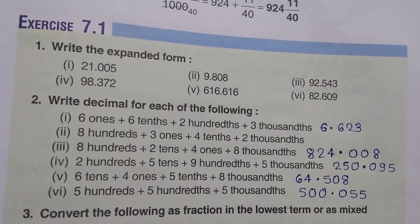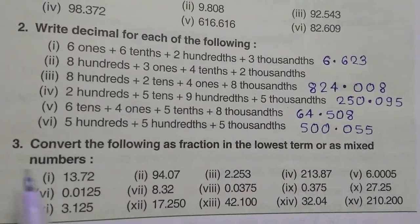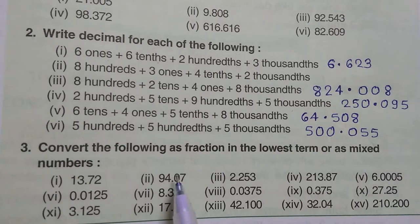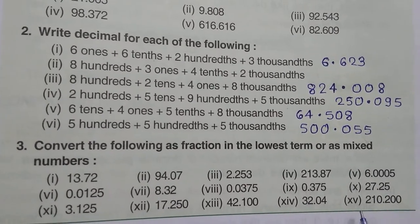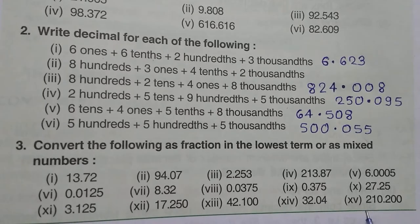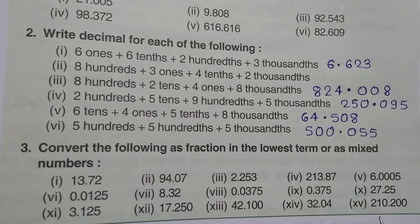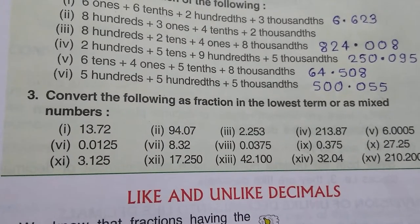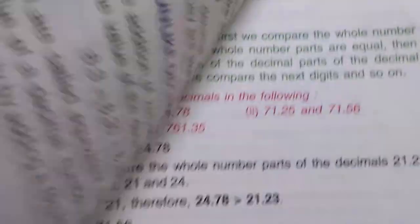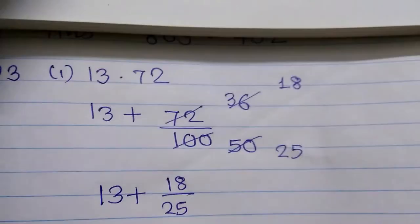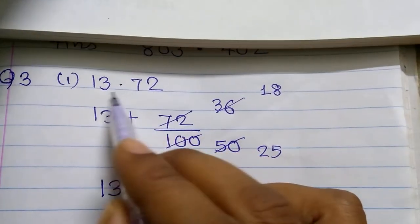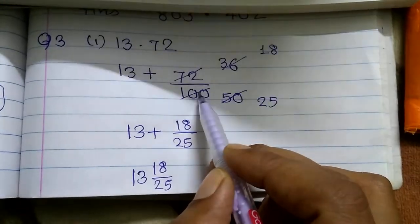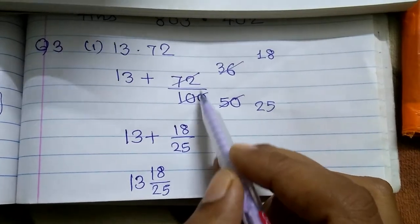Now let's see question number 3 of the exercise: 'Convert the following as a fraction in the lowest term or as a mixed number.' We have a total of 15 questions. The solution for the first one, 13.72: we break it into two parts – 13 plus 72/100. Now we try to simplify 72/100.